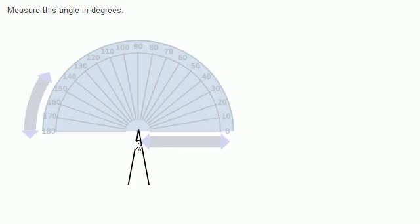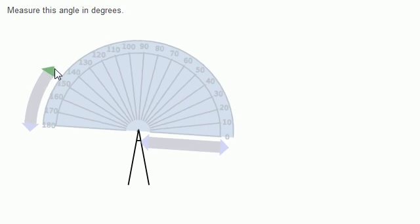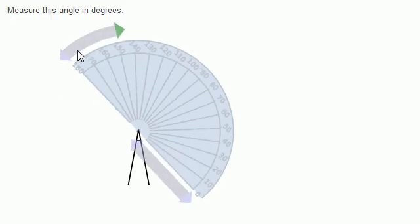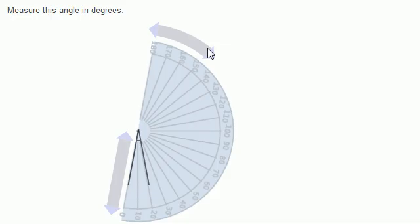So this zero side should be at this side of the angle. Let's rotate it that way — just keep rotating it. That looks about right. One side is at the zero mark, and then the other side, if this was a ray, looks like pretty close to the 20 degree mark. So I'll type that in — and that is the right answer.